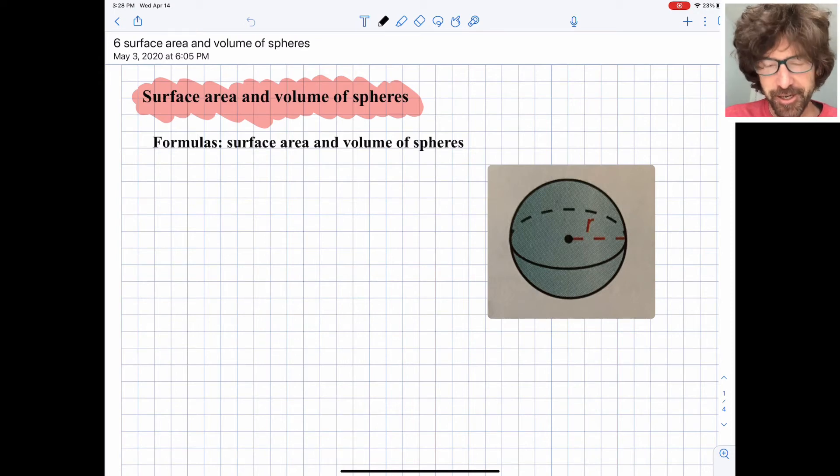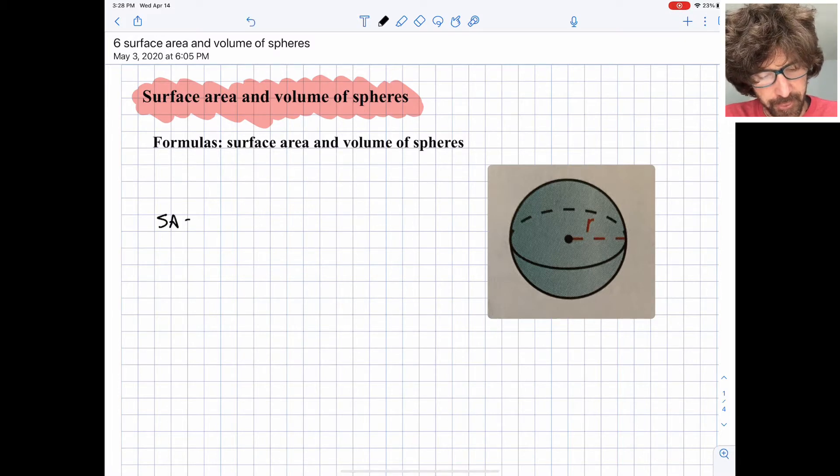All right, this is a video for geometry on spheres and we're going to be looking at both surface area and volume of spheres. A sphere being the set of all points in three dimensions that are equidistant from a center point. So to find the surface area of a sphere, we're going to use this formula, 4πr², and then to find the volume of a sphere, we're going to use this formula, 4/3πr³.